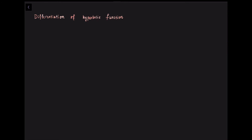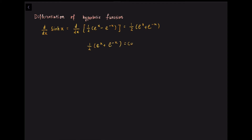To differentiate sinh(x) and cosh(x), we use their exponential definitions. For sinh(x), d/dx of sinh(x) equals d/dx of (1/2)(e^x minus e^(−x)), which equals (1/2)(e^x plus e^(−x)). From the definitions, we know this equals cosh(x). Therefore, d/dx of sinh(x) equals cosh(x).